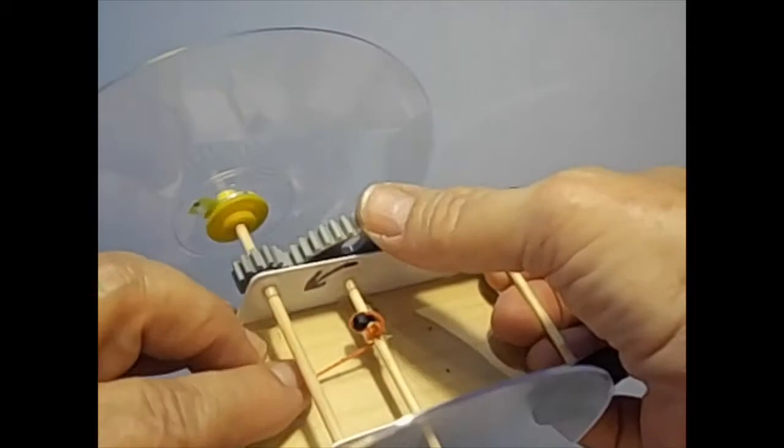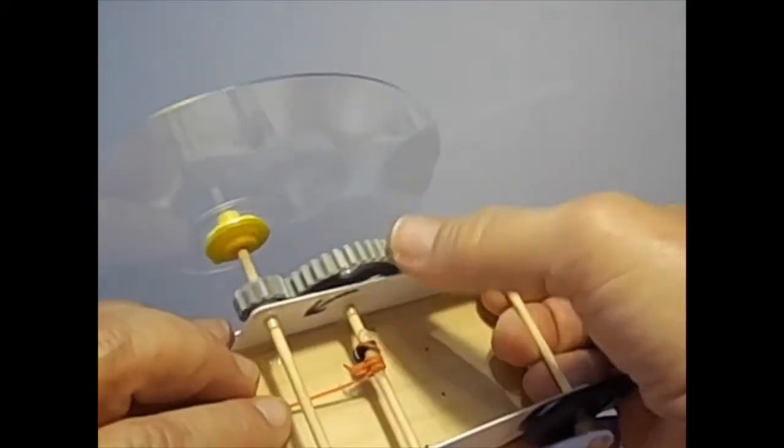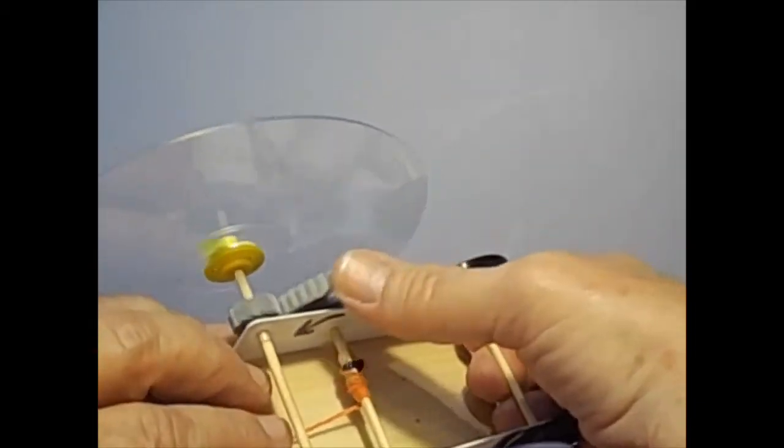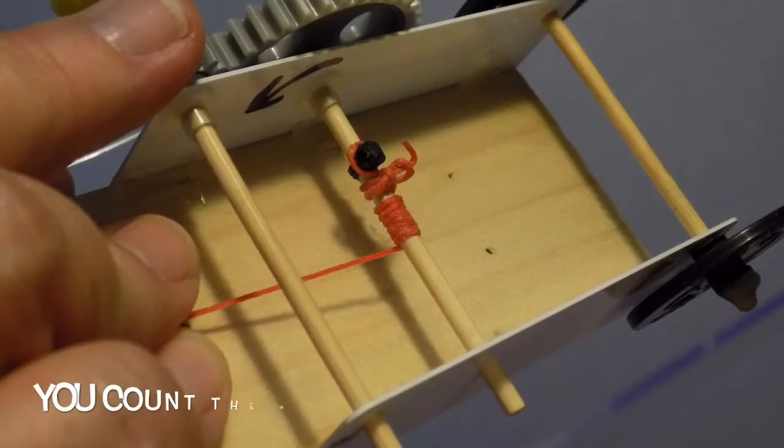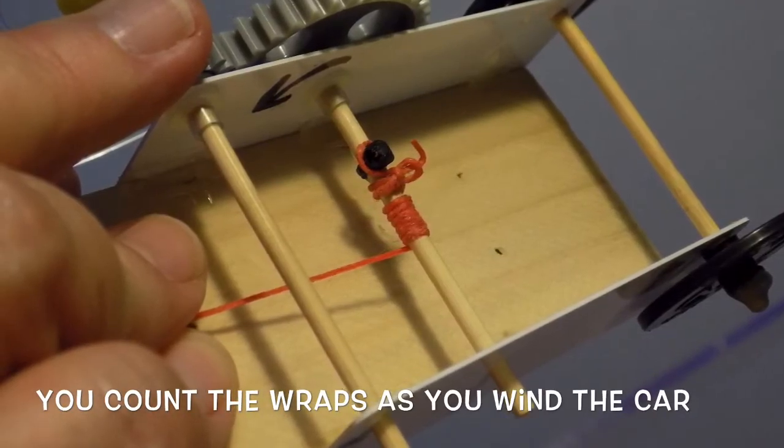From experience, we know that without extending the bail of the mousetrap and with a certain size axle, we can get approximately 10 string wraps. So for ease of calculation, the variable W, number of string wraps, will be fixed at 10.